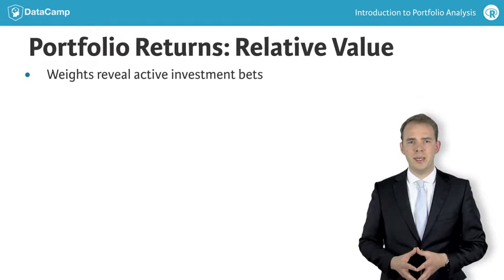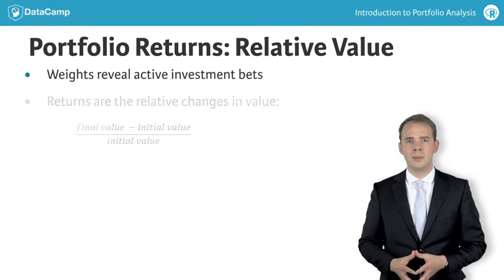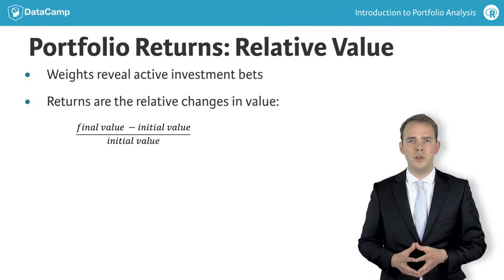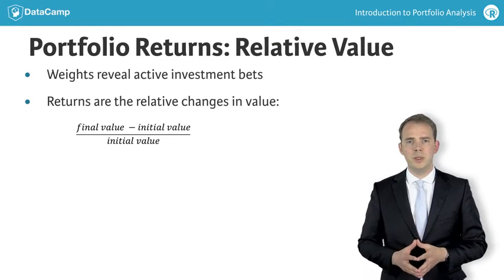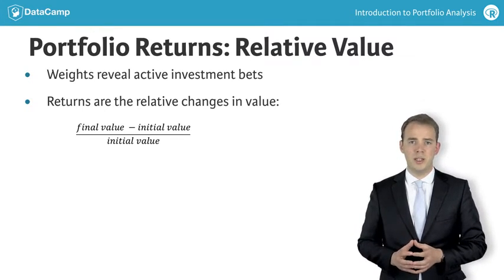When studying this impact, investors typically do not analyze the change in the investment value in absolute terms, but in relative terms. This leads them to compute simple returns, defined as a change in value over the period relative to the initial value. The simple return is thus the final value minus the initial value, divided by the initial value.